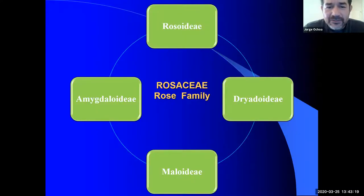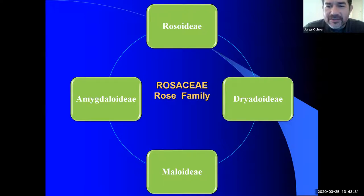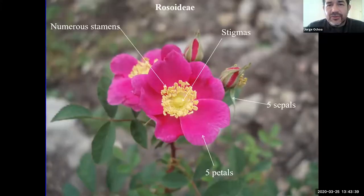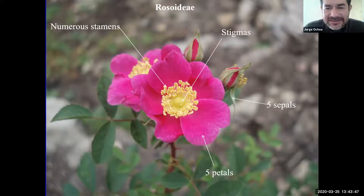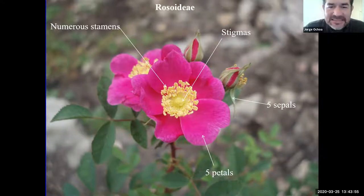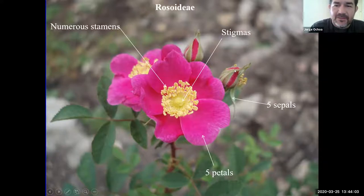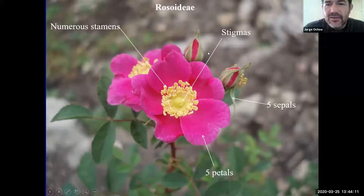We divide the family into several subfamilies: Rosoideae, Amygdaloideae, Maloideae, and Dryadoideae. Looking at the Rosoideae first — here is a wild rose flower. Wild rose flowers have five petals, which is different from cultivated hybrids. There are five sepals that protect the flowers, and many stamens throughout, along with one or several stigmas within the rose flower itself.